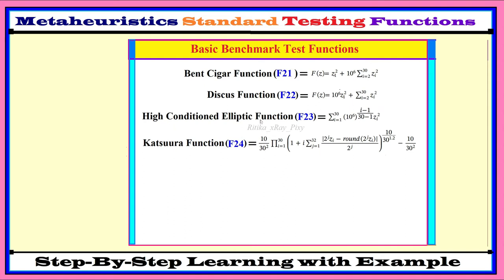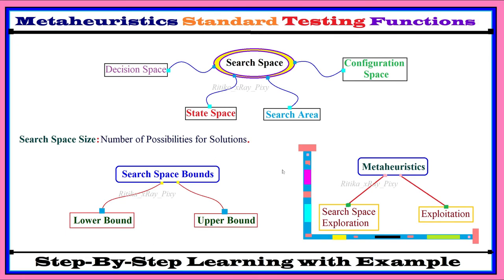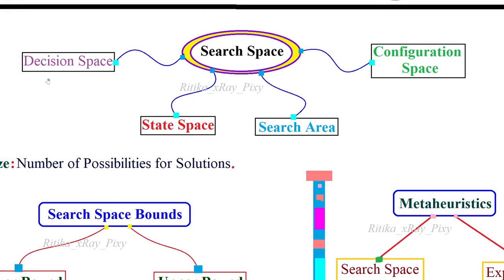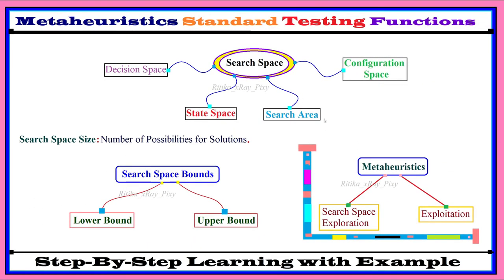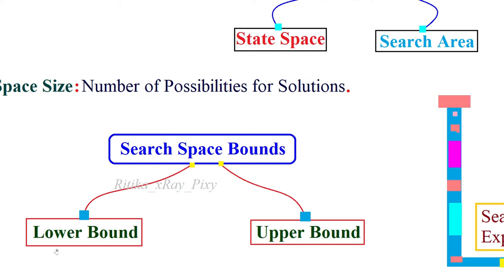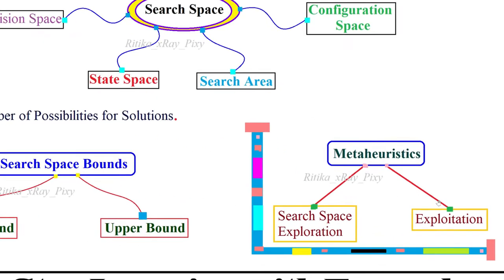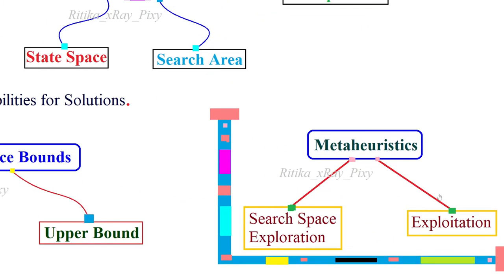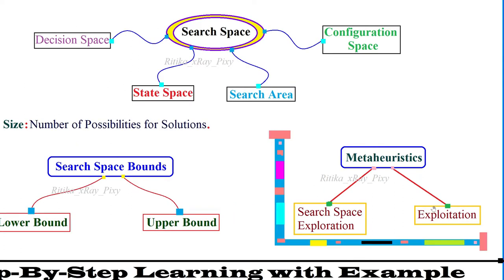Now we will try to understand the search space. Search space plays a major role in metaheuristics. Metaheuristic search is carried over the whole search space, also known as decision space, state space, search area, or configuration space. Search space size represents the number of possibilities for the solution, defined by lower and upper bounds. A metaheuristic is successful when there is a proper balance between exploration and exploitation. Fitness functions guide the whole search process toward the global optimal solution.